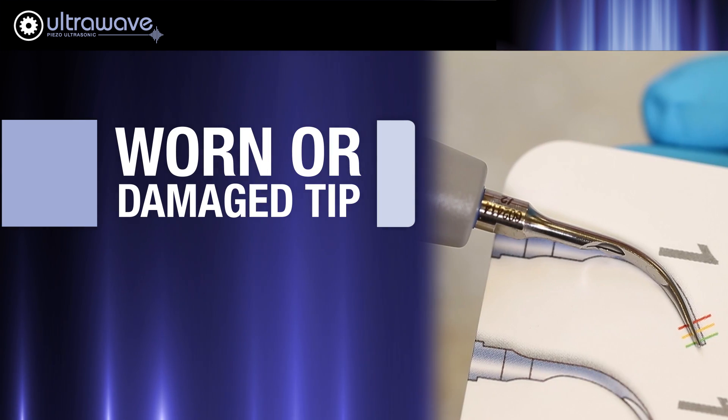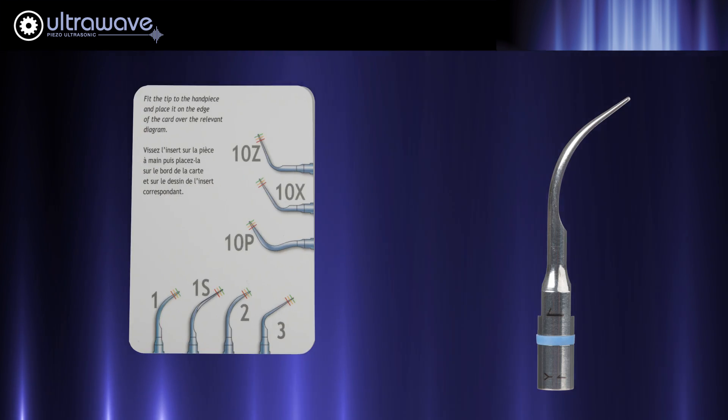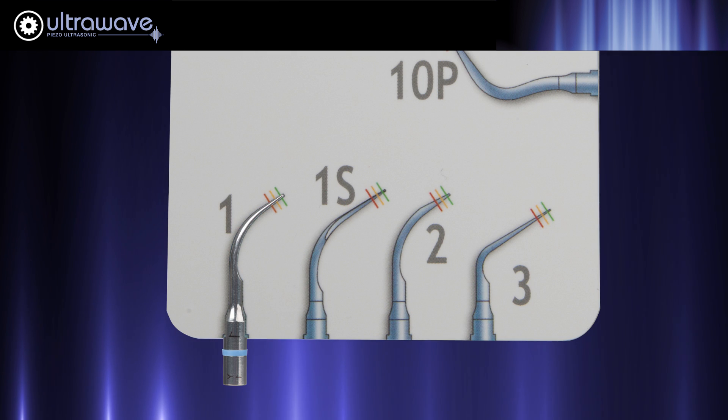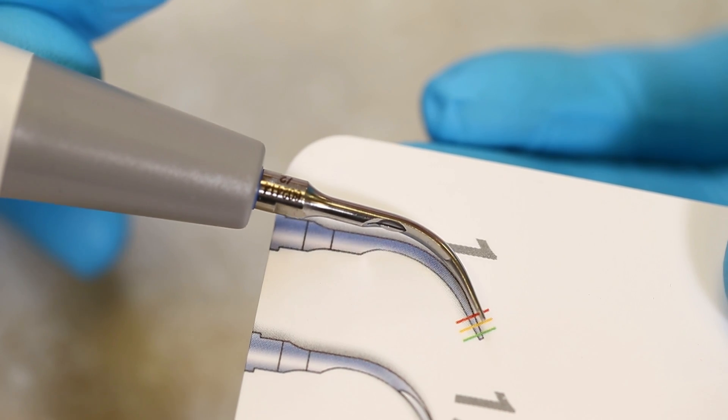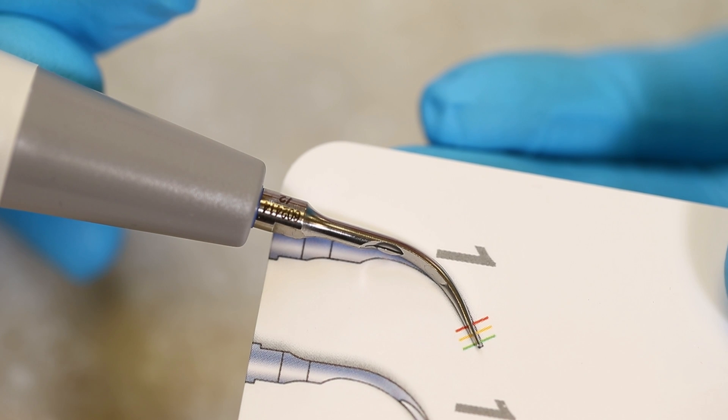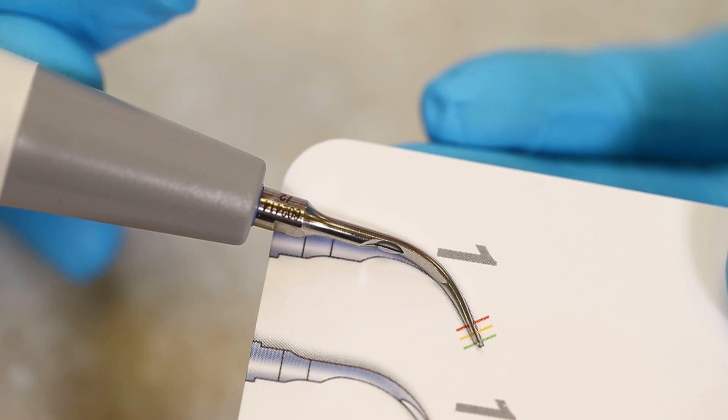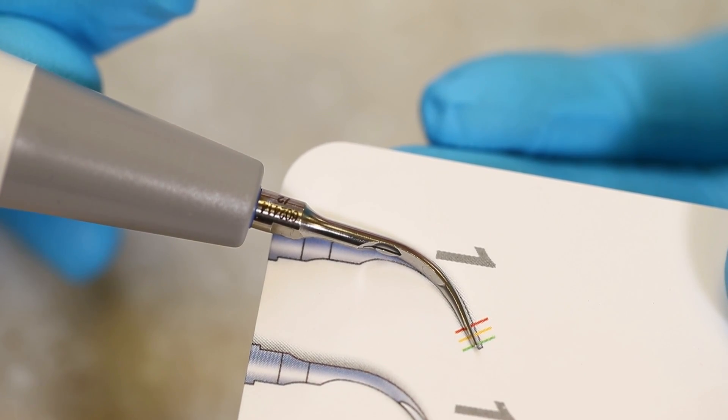You can check this by comparing the tip that you are using to the tip card included with your unit. On the tip card, there are three lines. If you find that your tip is worn down below the yellow or red line, it should be replaced with another ultradent satellite tip.